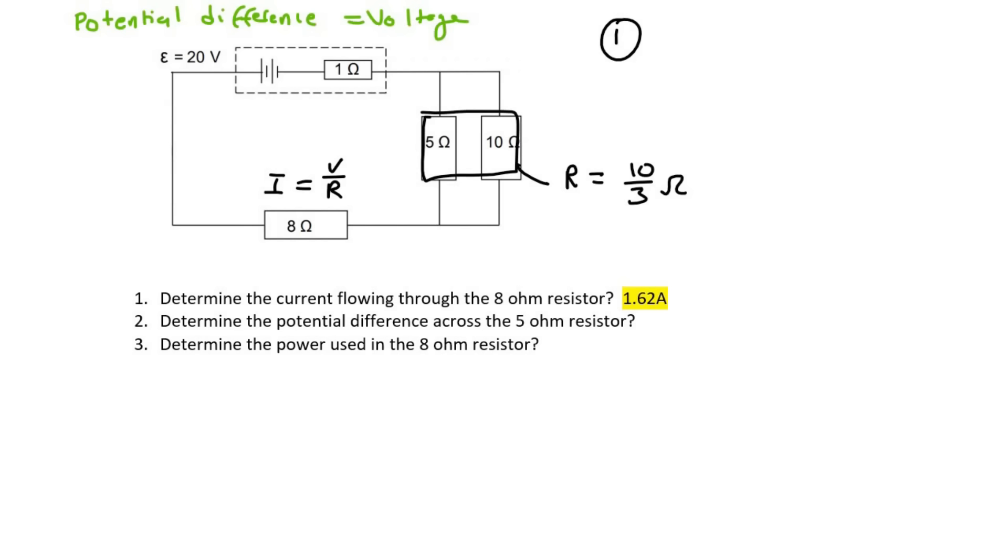So we combine them using the parallel formula. And if you remember, we did that just now. And we got 10 over 3. Okay, so we can almost imagine that this is just one resistor where the resistance is 10 over 3 ohms. Now, we don't know how much current is going through here and how much current is going here. However, we do know how much current is going combined because we know that there is 1.62 amps.